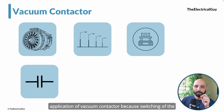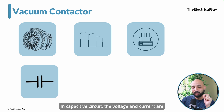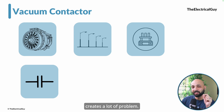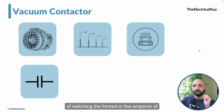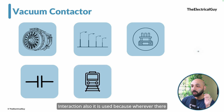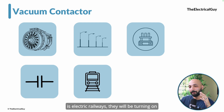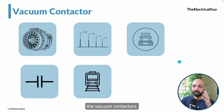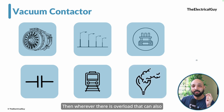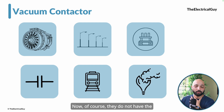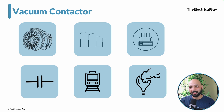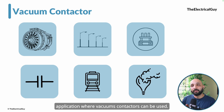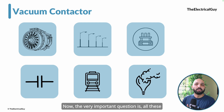Capacitor bank switching is another important application. In a capacitive circuit, voltage and current are out of phase by 90 degrees, which creates switching challenges, but vacuum contactors are capable of switching limited capacitive currents. They are also used in electric railways for turning supply on and off. Additionally, where overload conditions occur, vacuum contactors can support that, and when coupled with a fuse in series, they can also provide overload and short circuit protection.